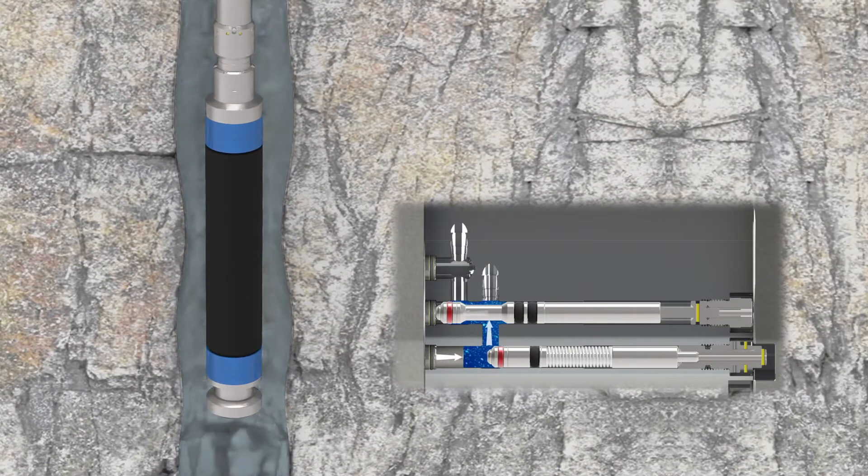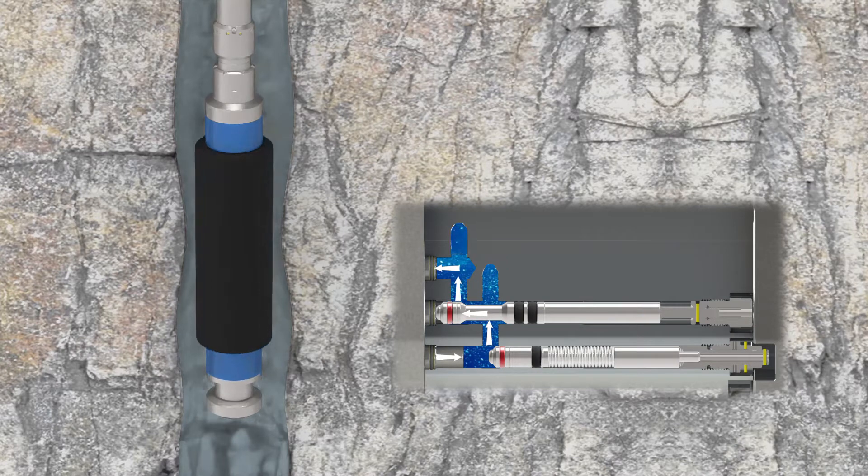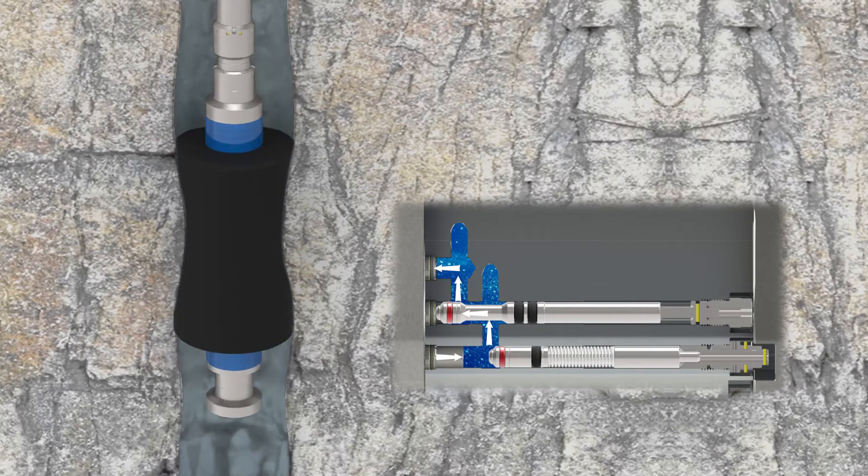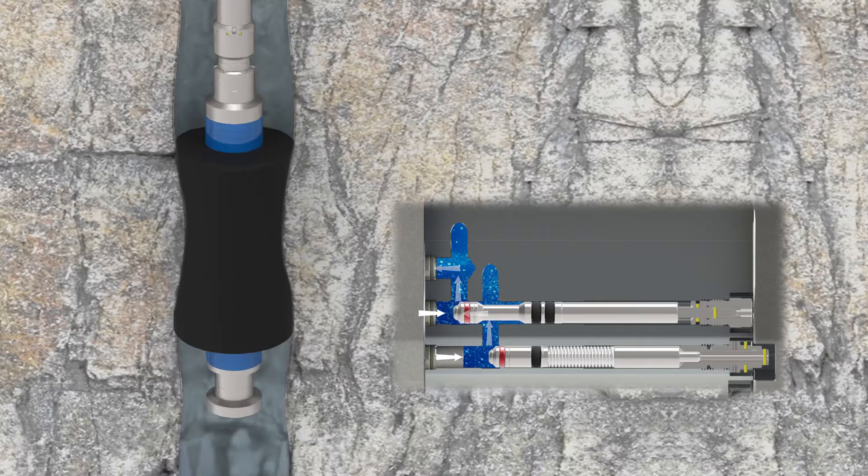Once the setting ball is seated applied pressure opens the delayed inflation valve allowing fluid to enter the Packer element. Upon reaching a pre-engineered inflation value the closing valve is actuated isolating the element inflation pressure.